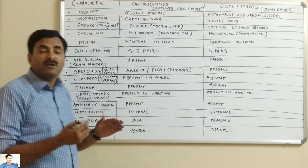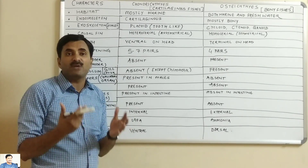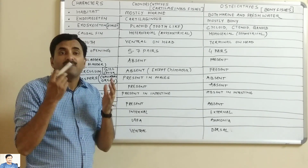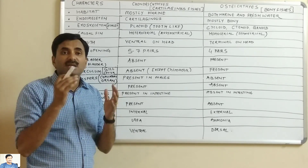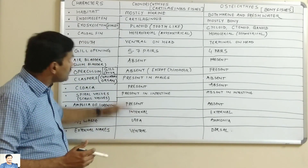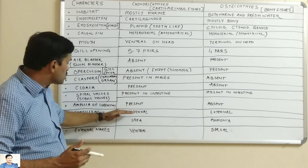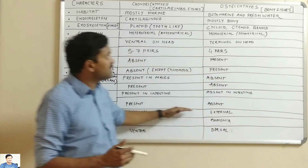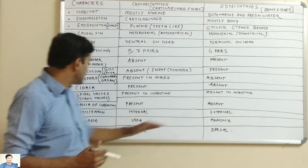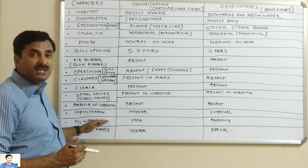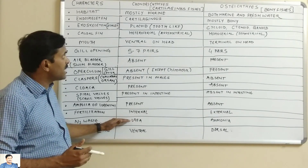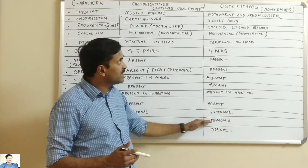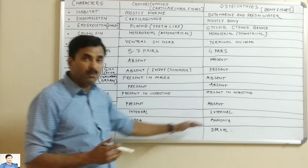Regarding fertilization — we generally assume that organisms found in water show external fertilization, but this is not always true. Cartilaginous fishes show internal fertilization, while in bony fishes fertilization is external. Regarding nitrogenous waste: cartilaginous fishes excrete urea, while bony fishes excrete ammonia.